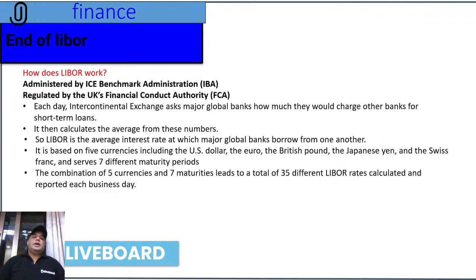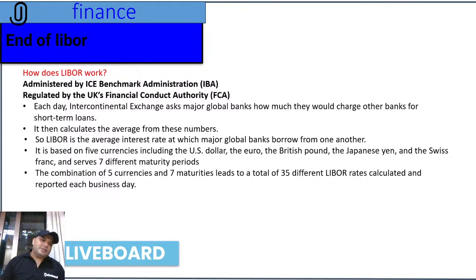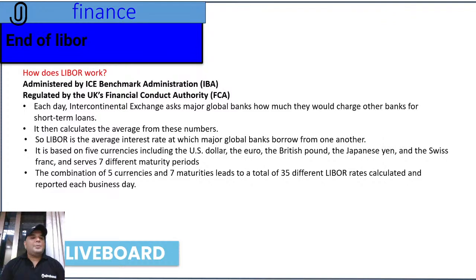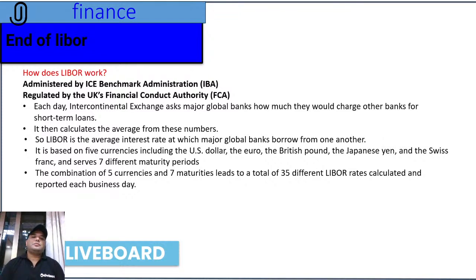LIBOR is, therefore, an average interest rate at which major global banks borrow from one another. This is the best possible definition of LIBOR for examination purposes — if asked to write about LIBOR in the descriptive part, simply write that LIBOR is an average interest rate at which major global banks borrow from one another.